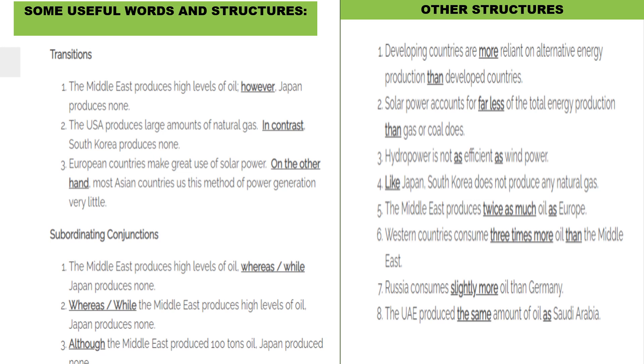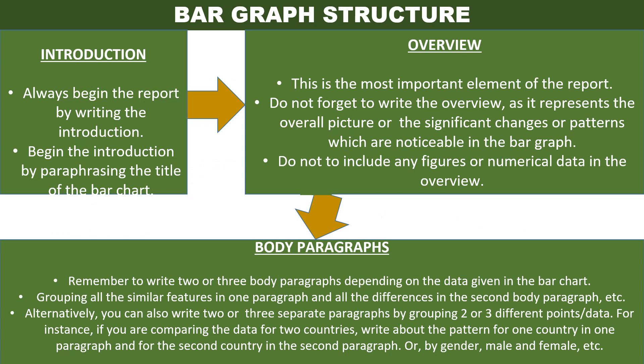Let's look at the bar graph essay structure. The structure is similar for all writing task one questions. You will begin with your introduction and overview combined in one paragraph. The introduction is a paraphrase of the question. For the overview, you look at the graph and see — but here, you will not see increase or decrease; you will see more or less, most or least. Then in the body paragraphs, you write similar trends in one paragraph and different ones in another.